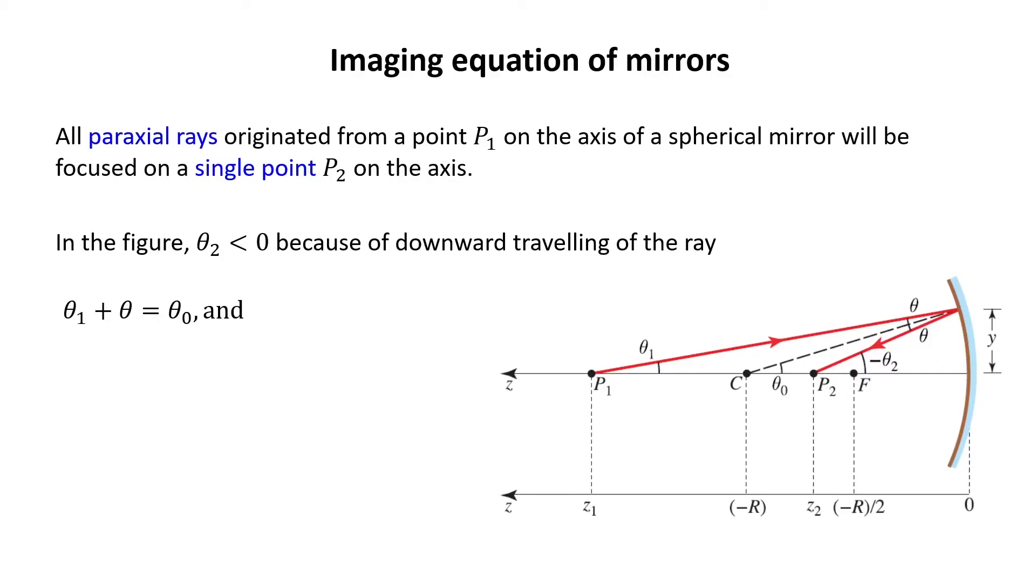Now, as you see, theta 0 is an external angle with respect to this triangle, the angle that starts from P1 to this point and then back to C. So theta 0 is theta 1 plus theta, where theta is the angle of incidence or reflection, both are equal.